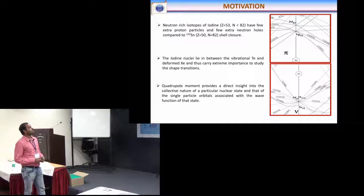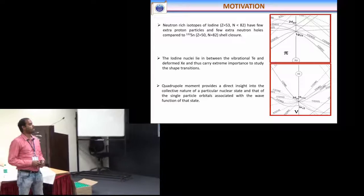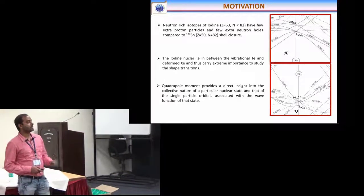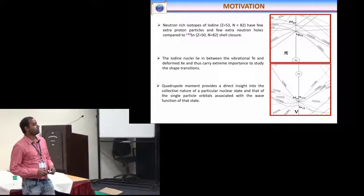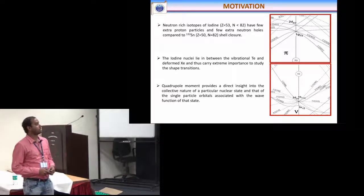We know the iron nuclei lie in between the vibrational tellurium and deformed genomes, so it carries important information about shape transitions and the quadrupole moment provides a direct insight into the collective measure of nuclear state. It is important to measure the quadrupole moment of these iron isotopes.